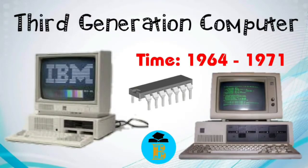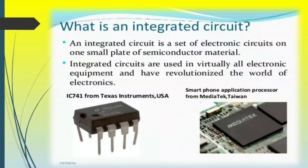Here comes the third generation of computers, which took place in 1964 and existed till 1971. The first generation used vacuum tubes, which were then replaced by the second generation using transistors, but these two were not sufficient. Therefore, a third generation of computers was introduced, and these were built on integrated circuits.